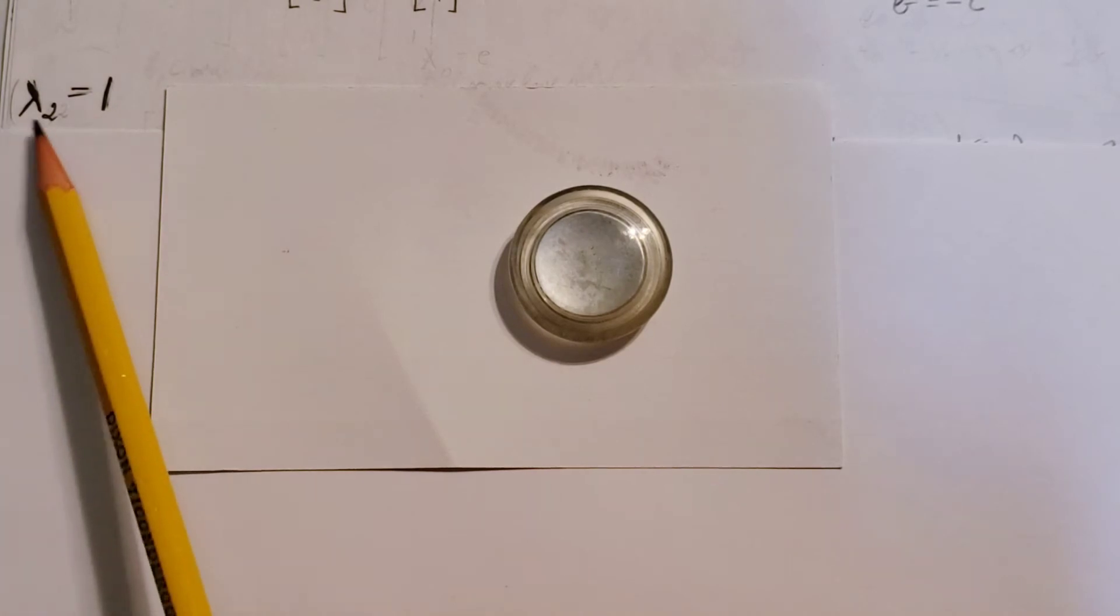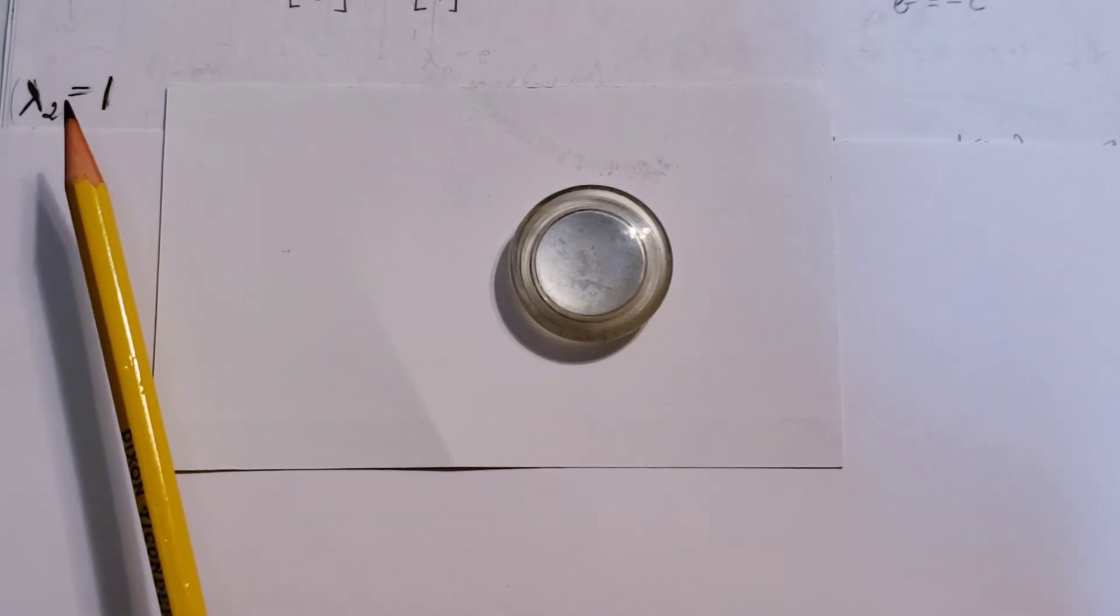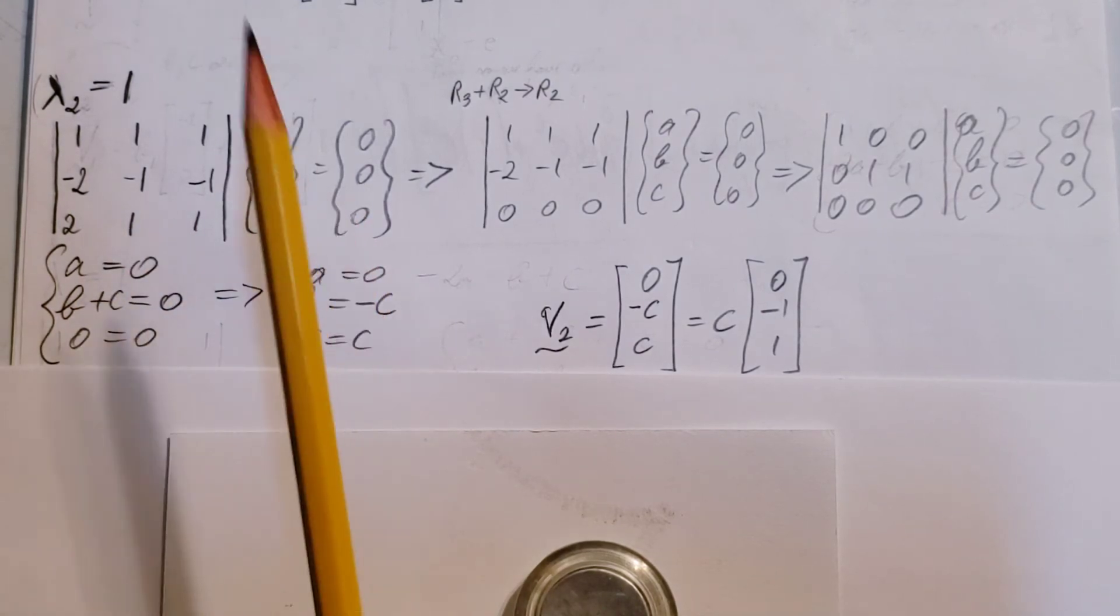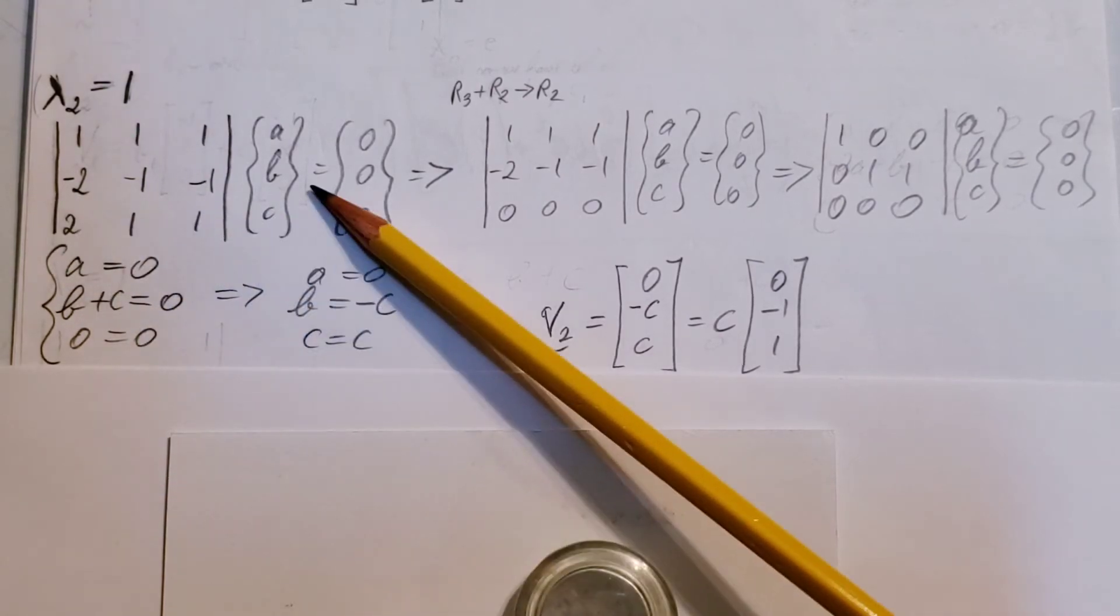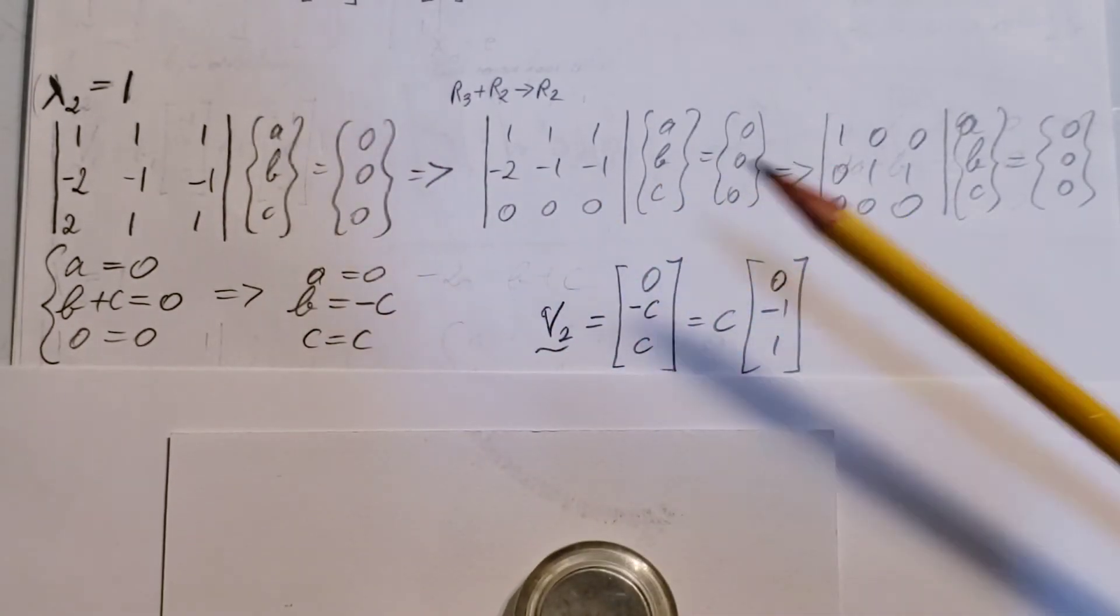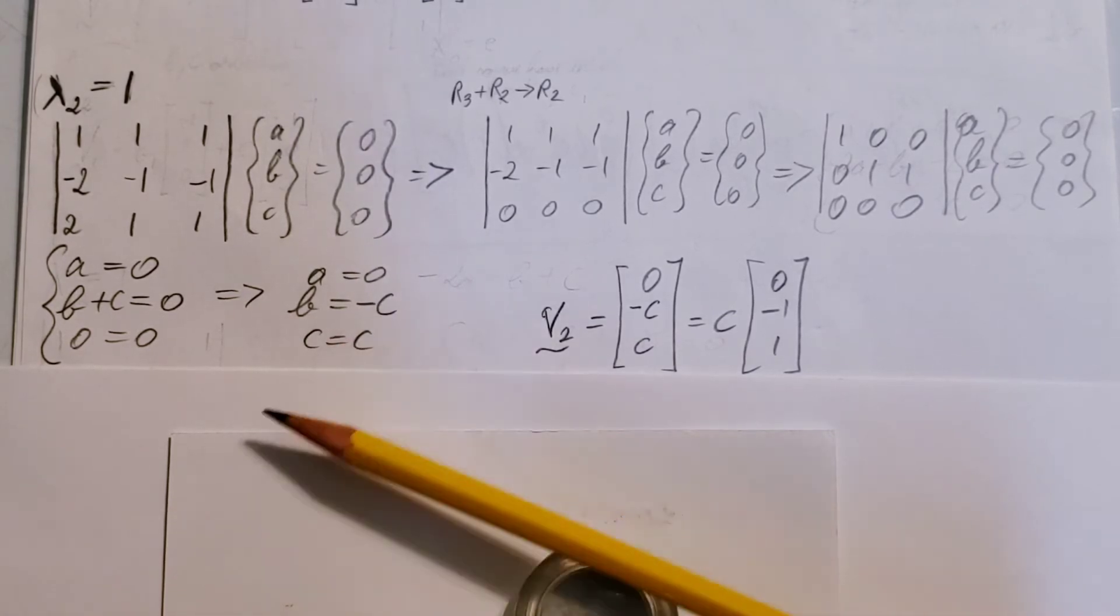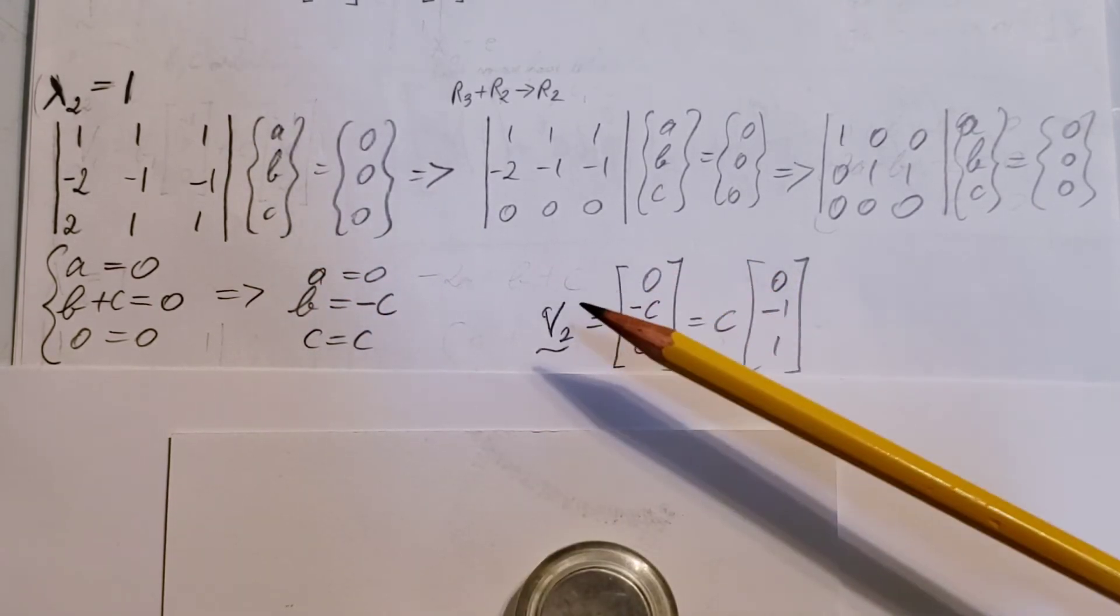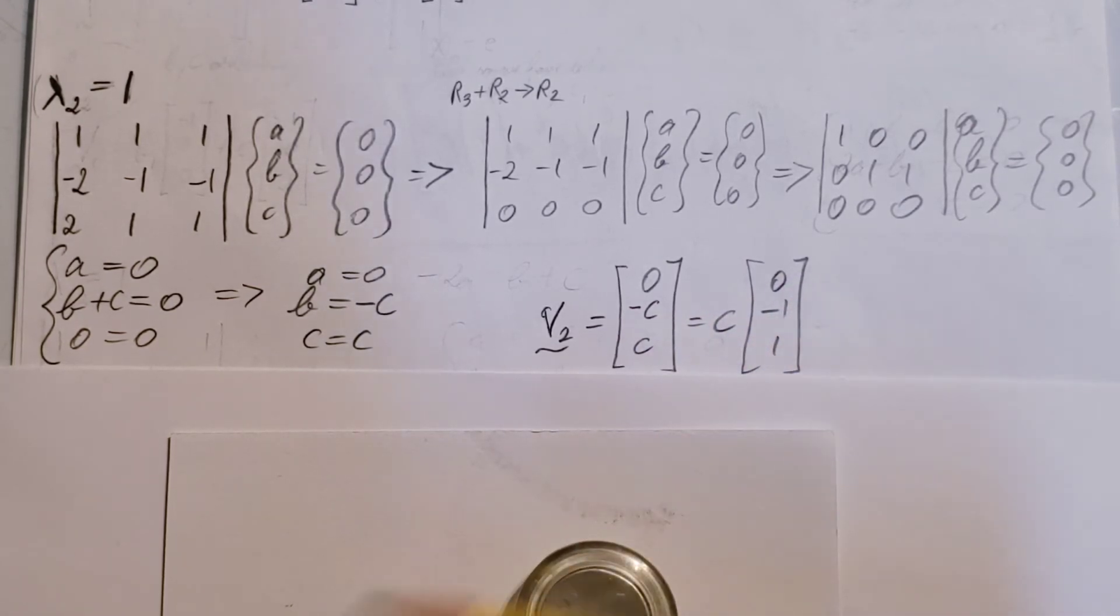Now, we're gonna take our next eigenvalue. Lambda 2 equals 1. We're gonna take one of the eigenvalues that equals 1. I'm gonna follow the exact same steps as we did for the first eigenvector here as well. Take this formula that we had here. Plug it in. Turn it into equation form. Our c will be arbitrary. That's gonna give me that b is equal to negative c, a is equal to 0. That will allow us to build up our second eigenvector. Factor out the c. 0, negative 1, and 1.